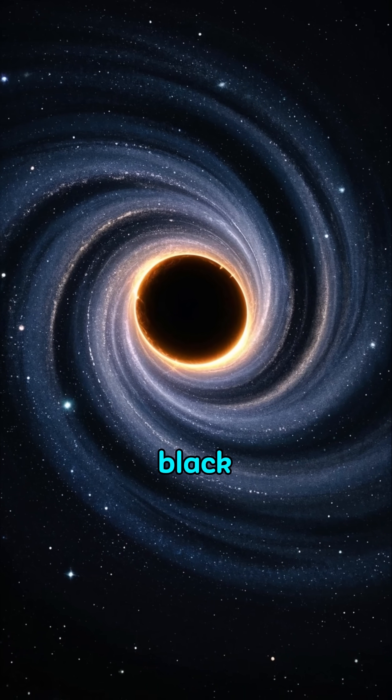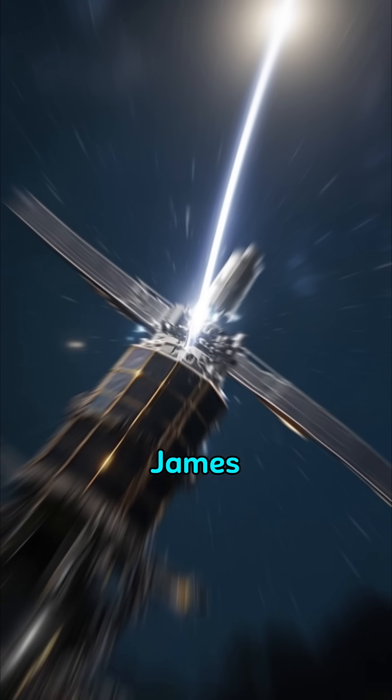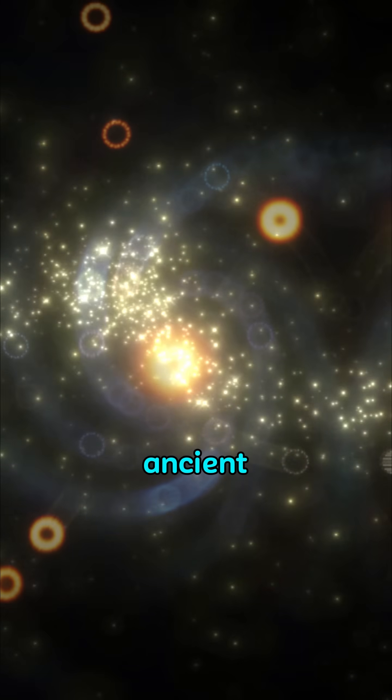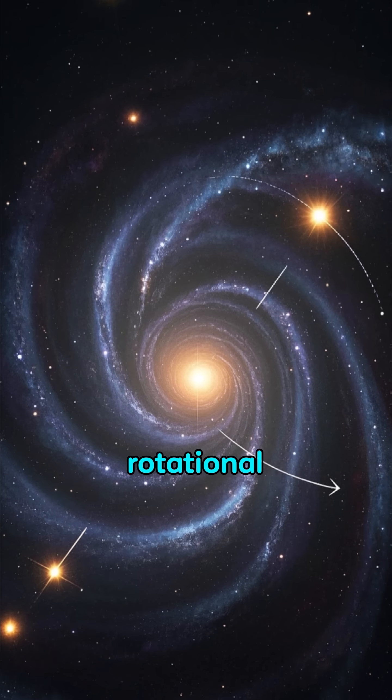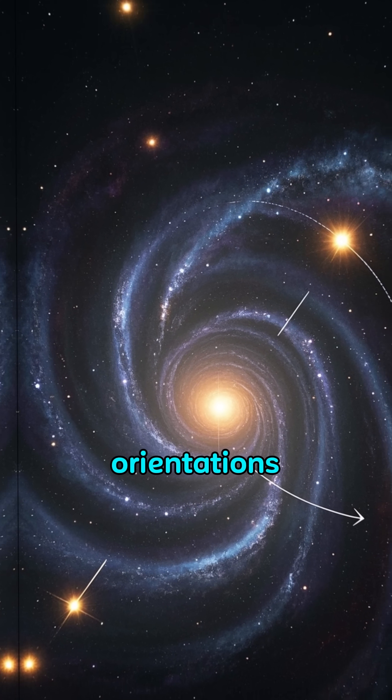Could our universe have been born from a black hole in another cosmos? Recent observations from the James Webb Space Telescope, JWST, reveal that a majority of ancient galaxies exhibit a surprising rotational bias, challenging the expectation of random spin orientations.